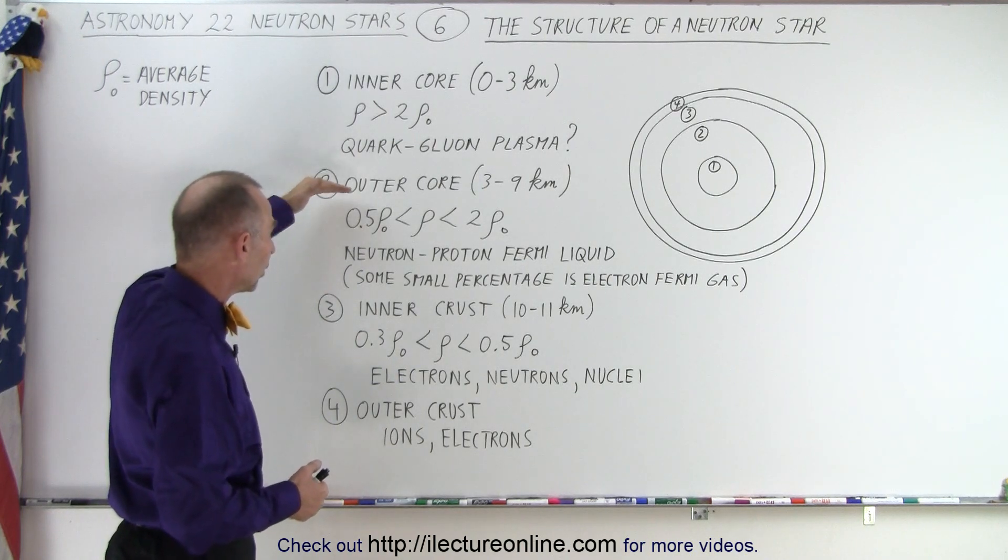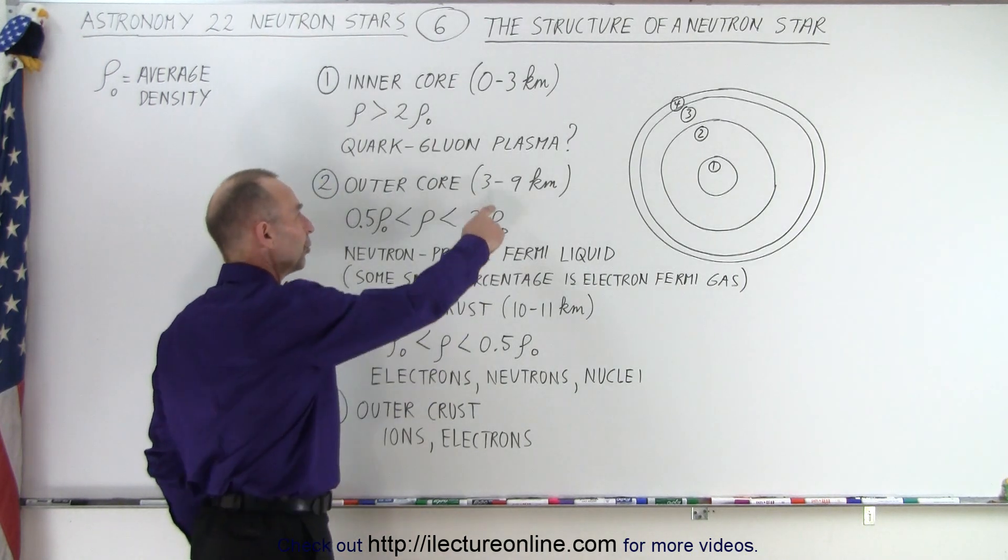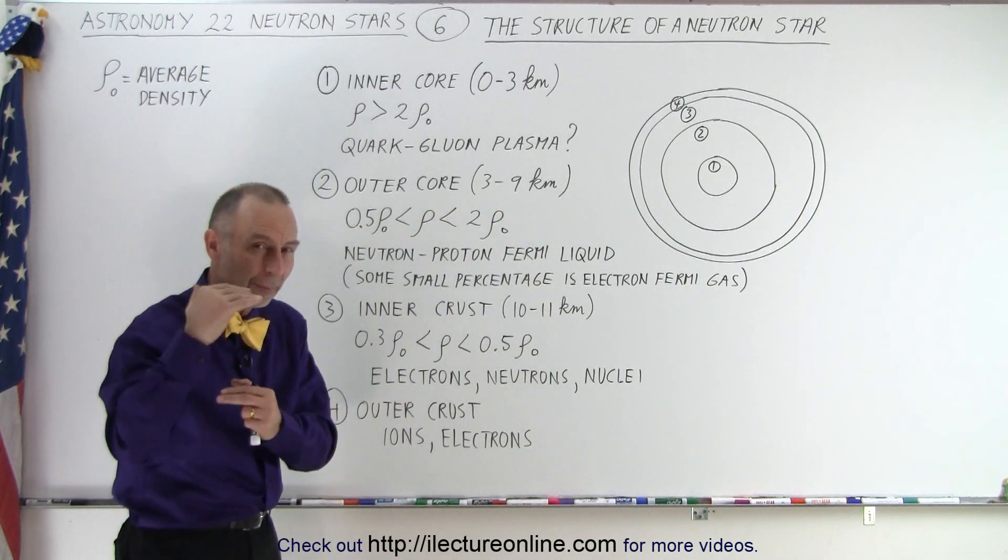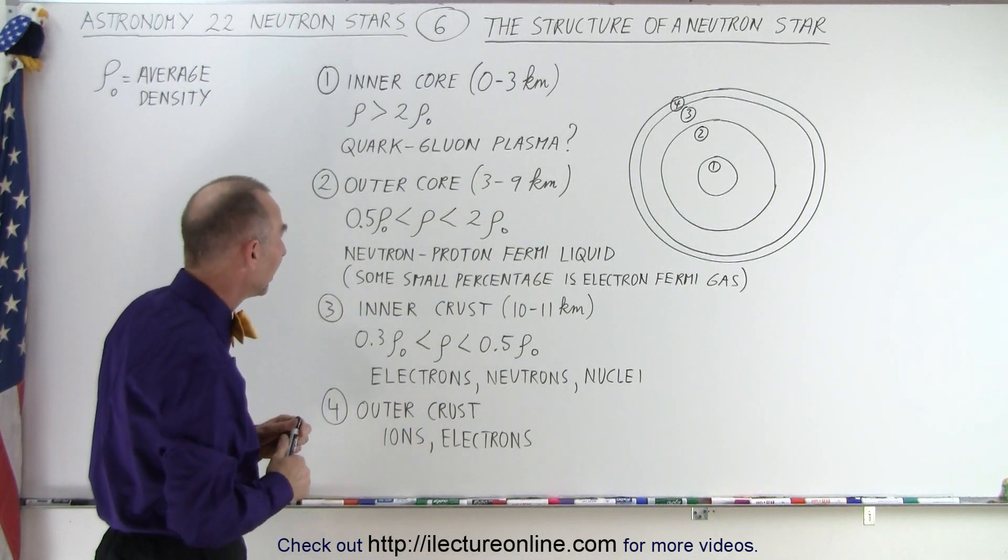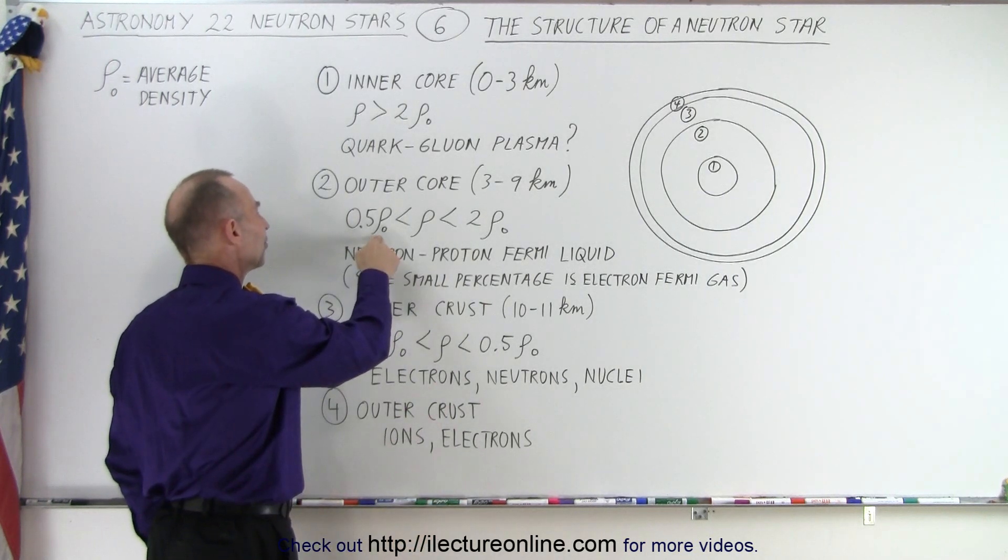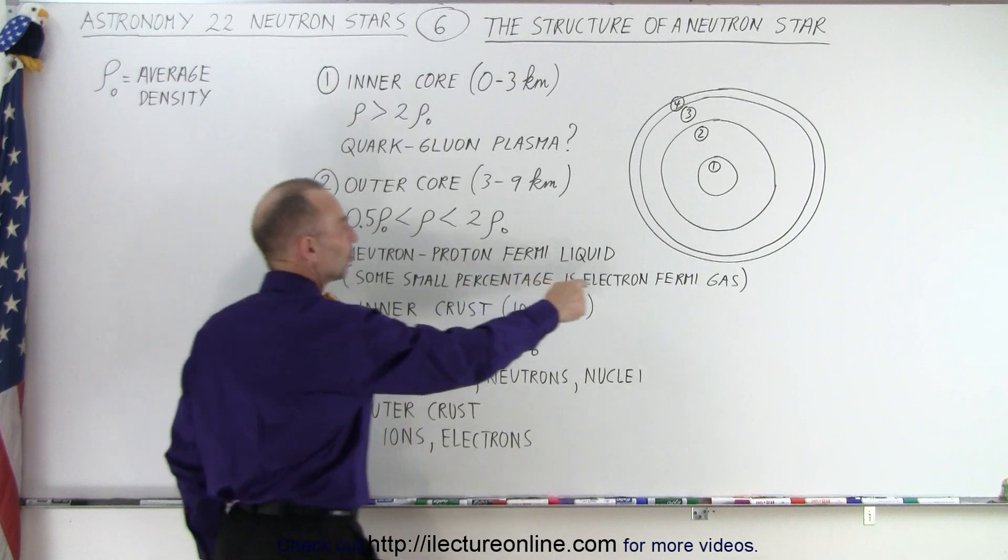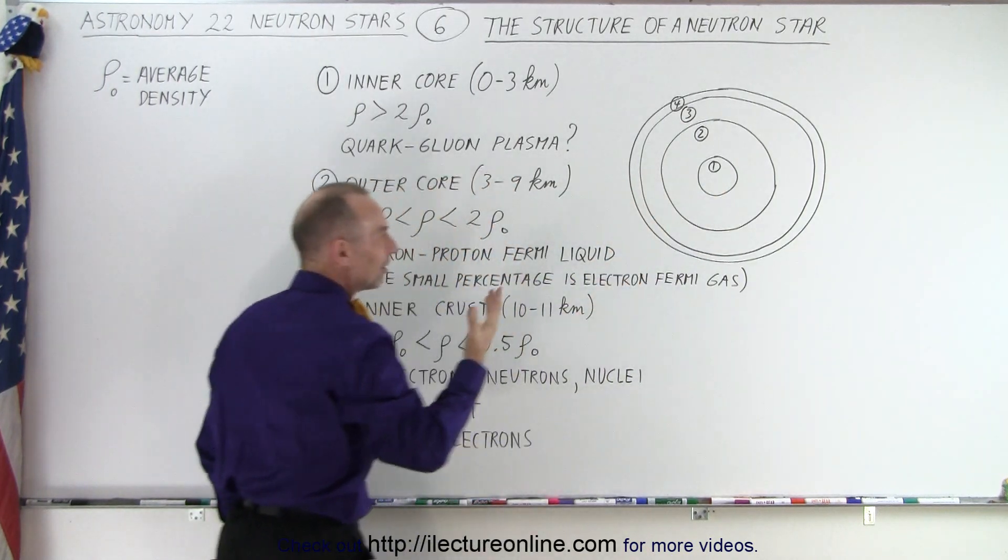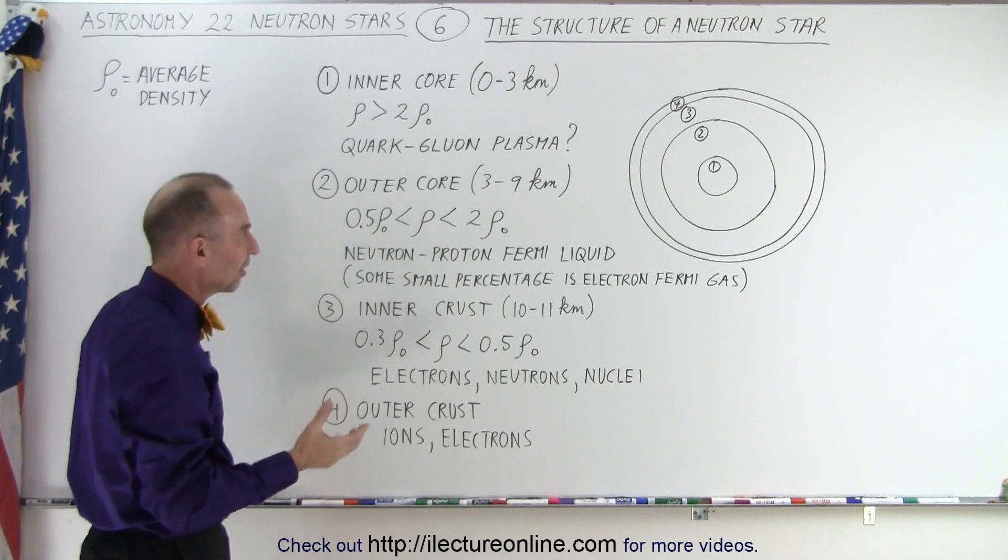Beyond that, we get to what we call the outer core, which takes up the region from three to nine kilometers away from the center. Remember that it's about 12 kilometers in radius. And so there the density is anywhere from a half times the average density to twice the average density. So on the boundary between the inner and the outer core, we would say that the density is roughly about twice the average density at that point.